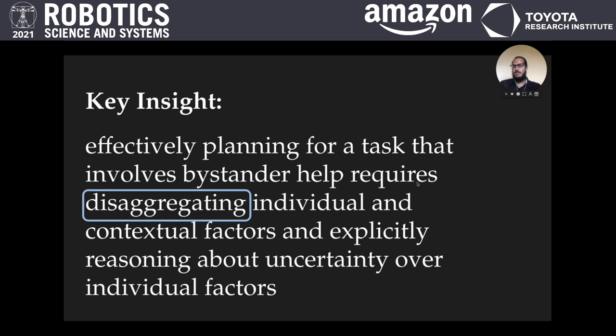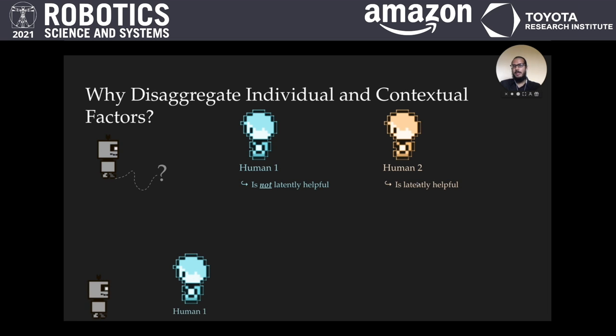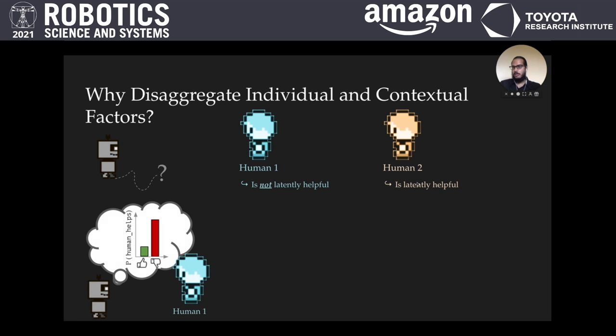First, let's consider why it's important to disaggregate individual and contextual factors. Consider the time when a robot needs help finding a room, and consider two potential helpers, one who is not latently helpful and the other who is. If the robot encounters human 1 in the hallway, its model should predict that they're unlikely to help it.